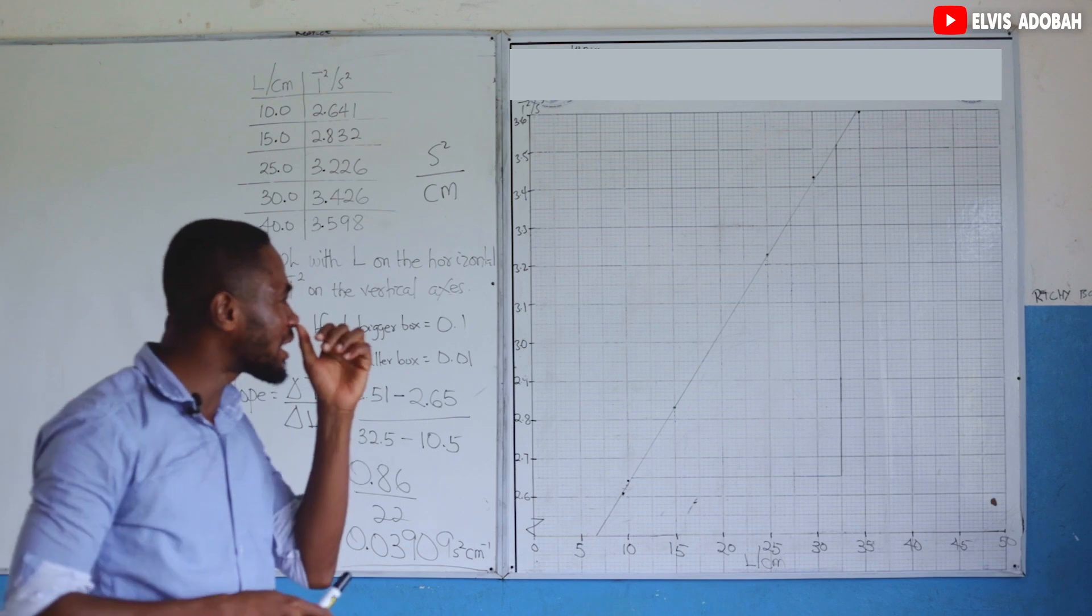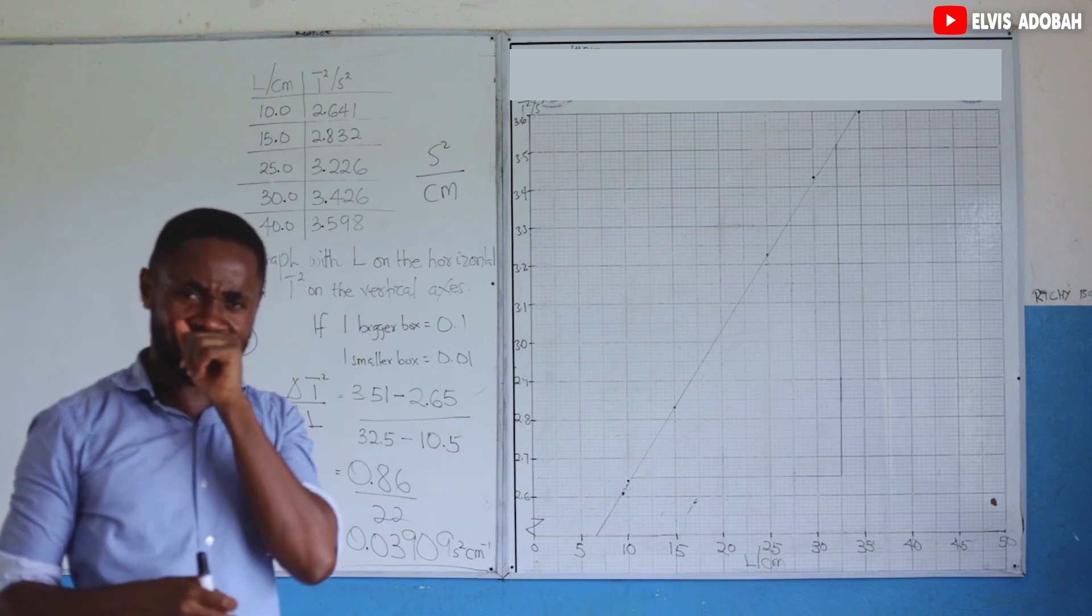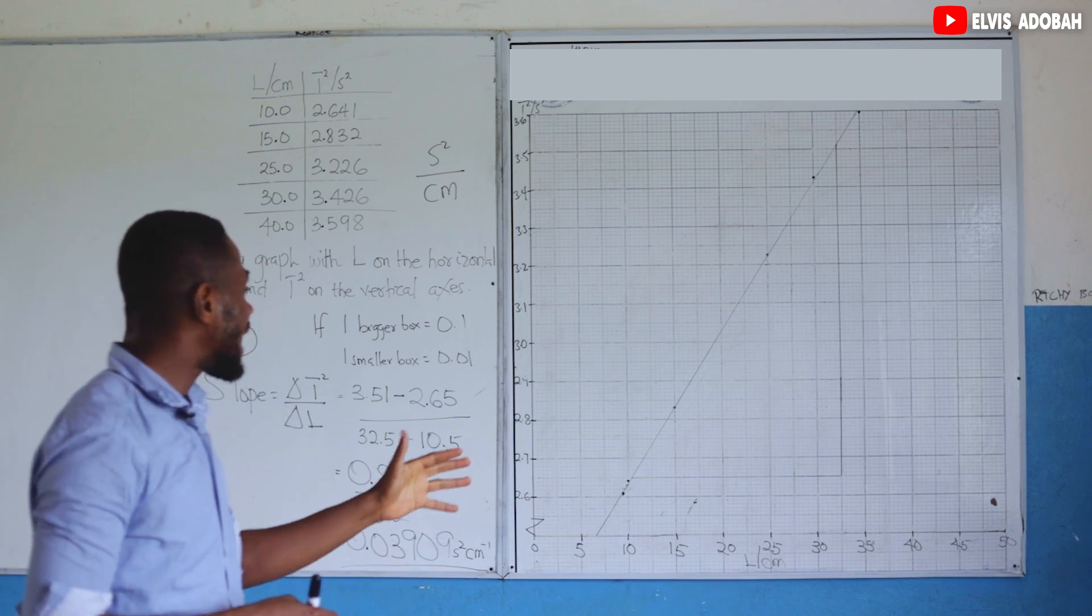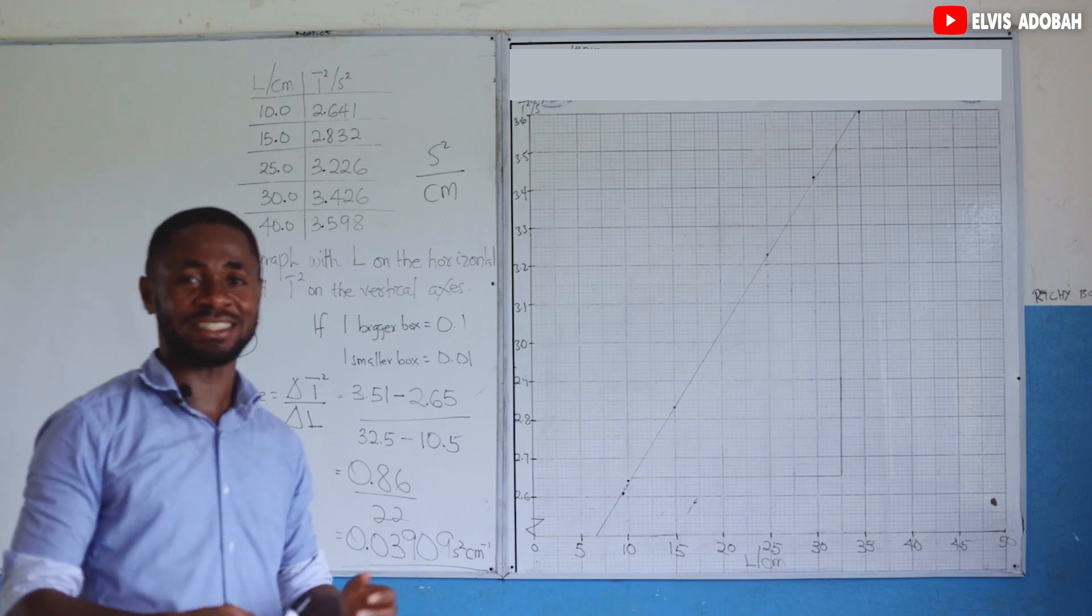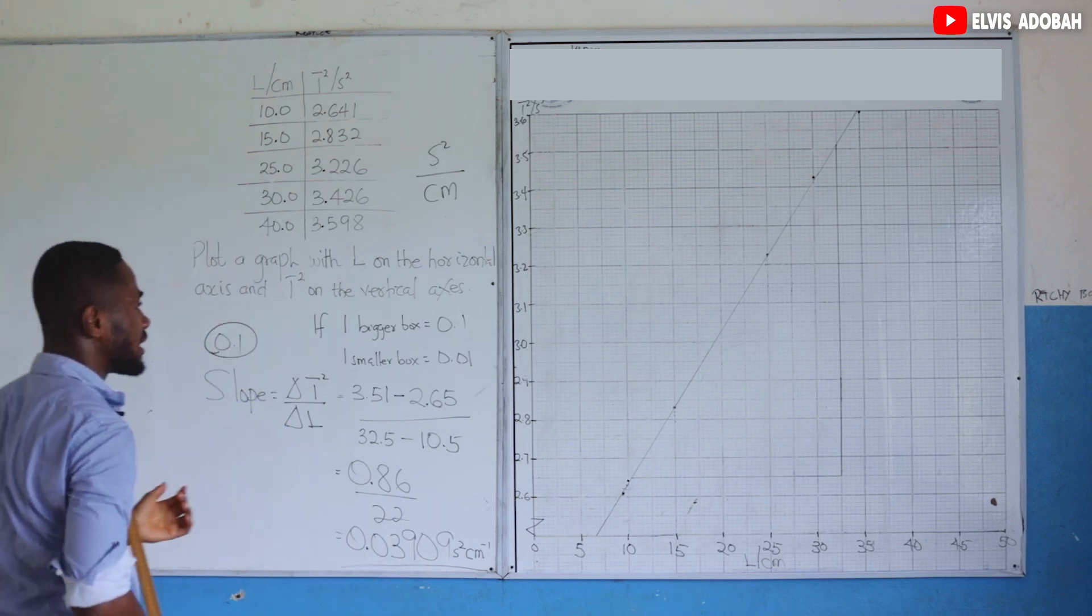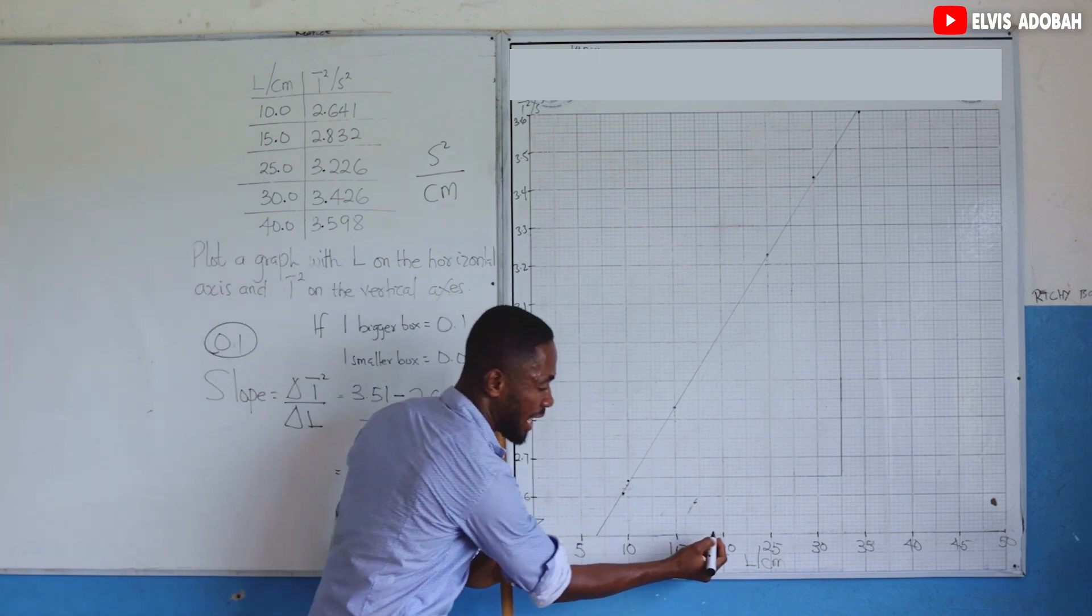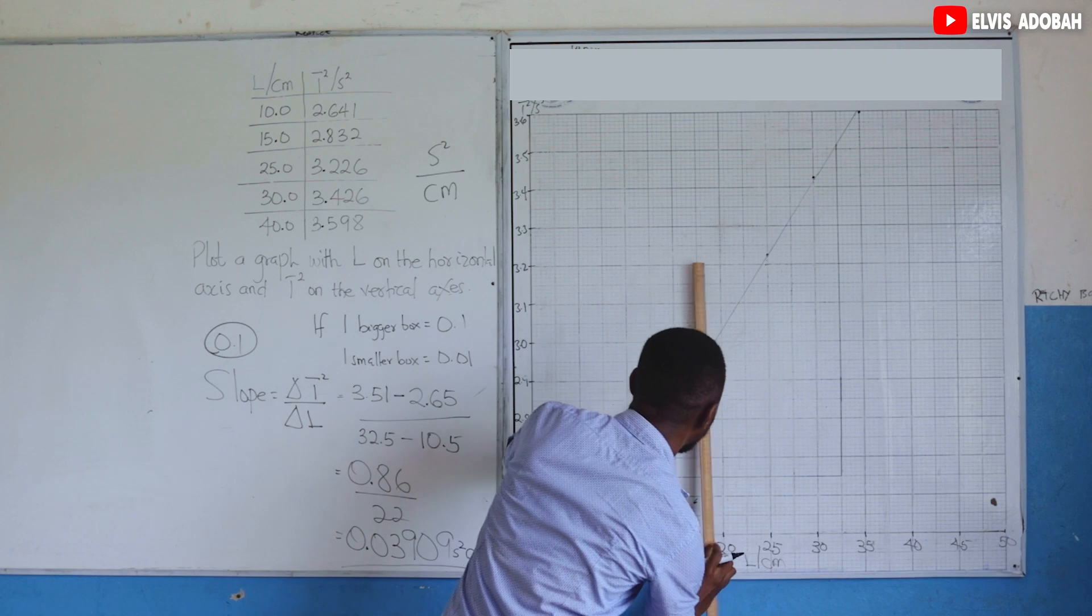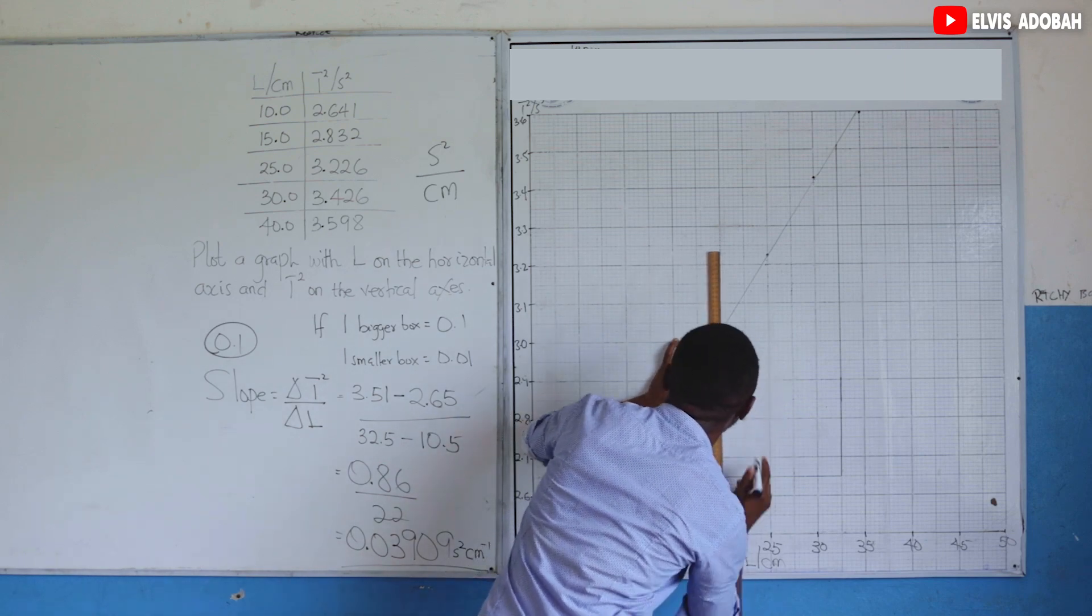They could also ask you to calculate the value of T squared when capital L is equal to any number, for example 20 centimeters. So when they ask you that, look for where the 20 centimeters is. So when L is equal to 20 centimeters, this is L is equal to 20. You will draw a line from that part to touch our straight line.